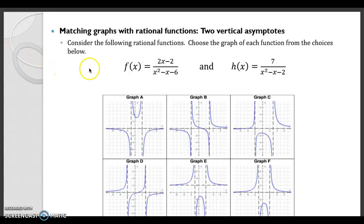So when we're looking at these two different functions and we want to match their graphs, we can see in the graphs that there are vertical and horizontal asymptotes. So that's going to be our first step is to find vertical and horizontal asymptotes.